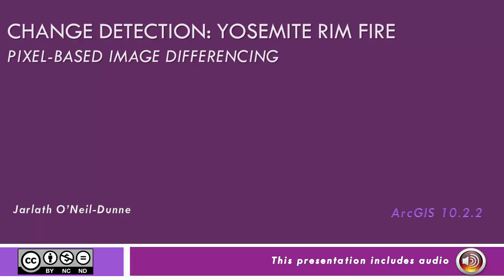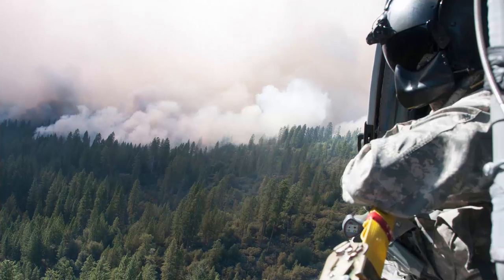In this video, we'll take a look at pixel-based image differencing change detection techniques in ArcGIS using the Yosemite Rim Fire as an example. The Yosemite Rim Fire started on August 17, 2013 and wasn't fully contained until late October of that year. It burned over 250,000 acres in the Sierra Nevada mountain ranges in California.